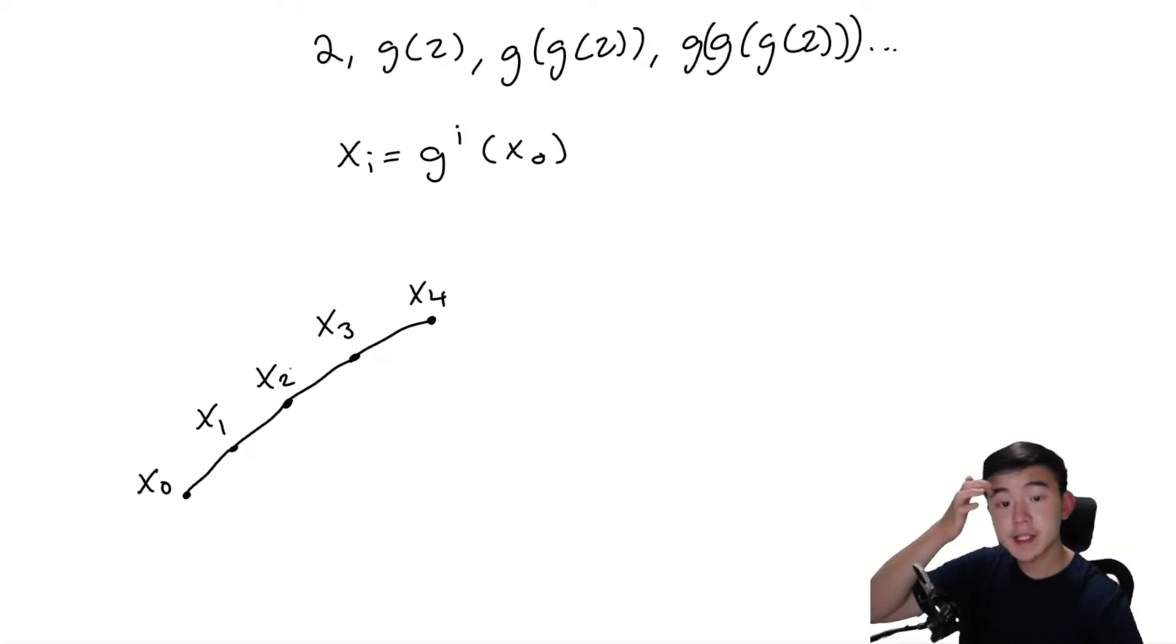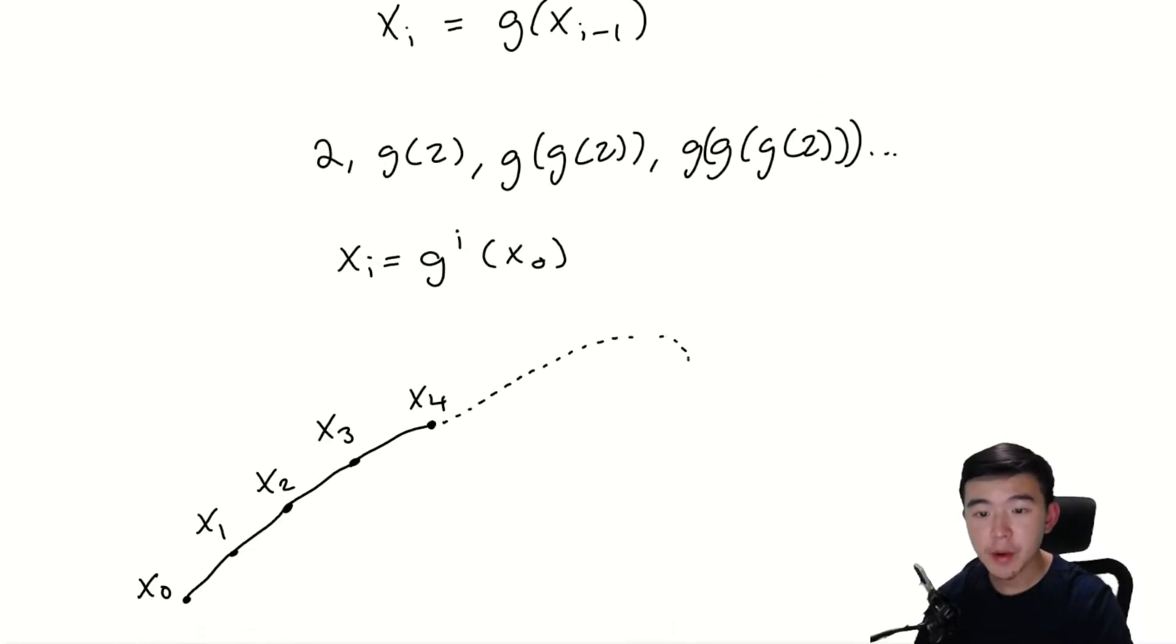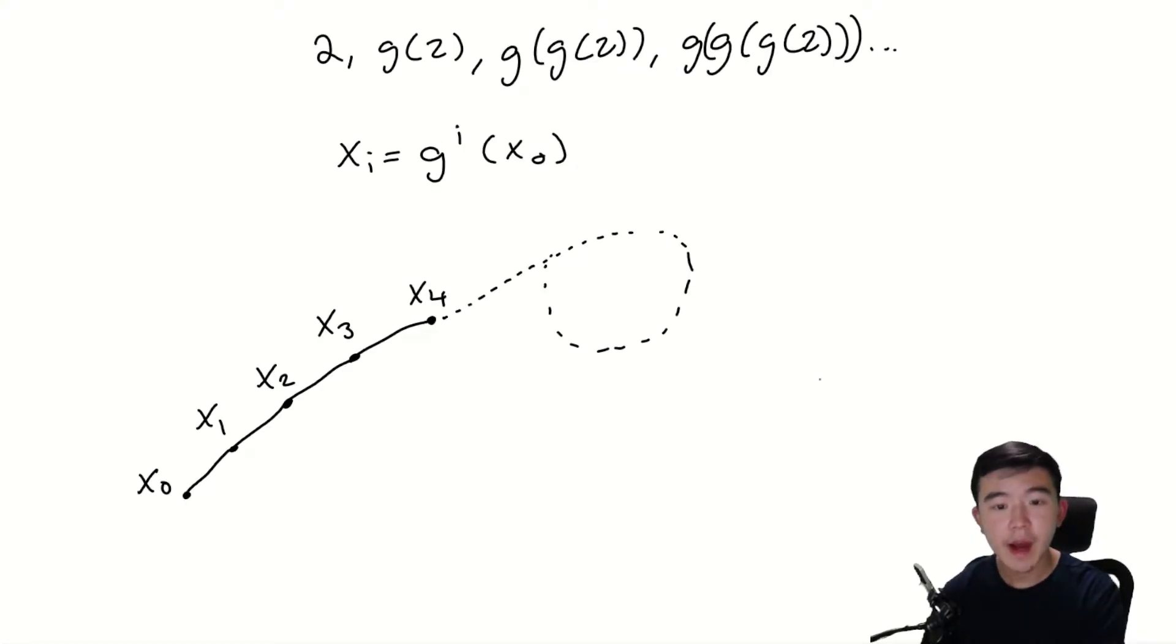We can visualize this sequence as a series of dots, where the next dot is just g applied to the previous dot. An important note is that since there are only n unique values that the terms in the sequence can take on, since we're doing everything mod n, and every term only depends on the term before it, eventually we will have to come back to a number that has already appeared in the sequence. At that point, the sequence will start to cycle. Notice how, as I've drawn it, the shape of the sequence kind of looks like the Greek letter rho.